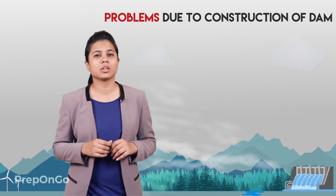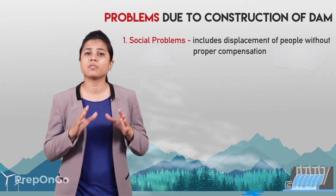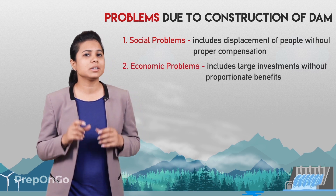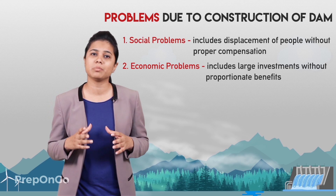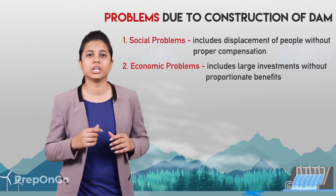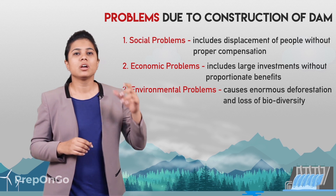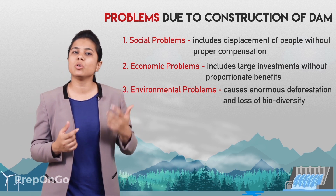There is sometimes opposition to the construction of these dams, such as the Tehri Dam on the river Ganga. The Narmada Bachao Andolan, about raising the height of the Sardar Sarovar Dam on the river Narmada, was very popular. There are three main problems arising from dam construction: the social problem — displacement of large numbers of peasants and tribals without appropriate compensation and rehabilitation; the economic problem — large investment of public money without proportionate benefits; and the environmental problem — enormous deforestation and loss of biodiversity.